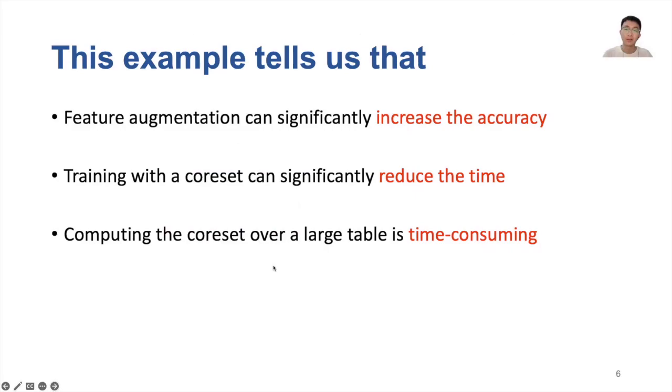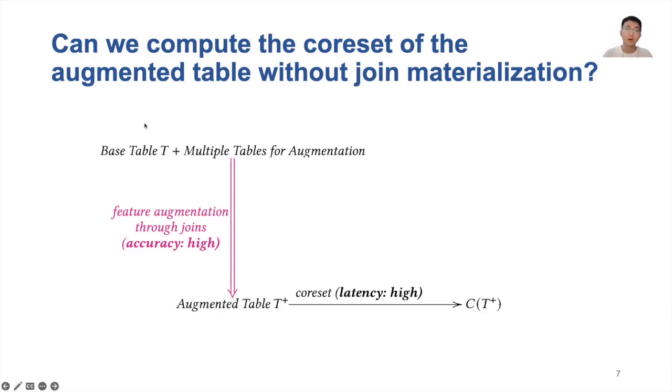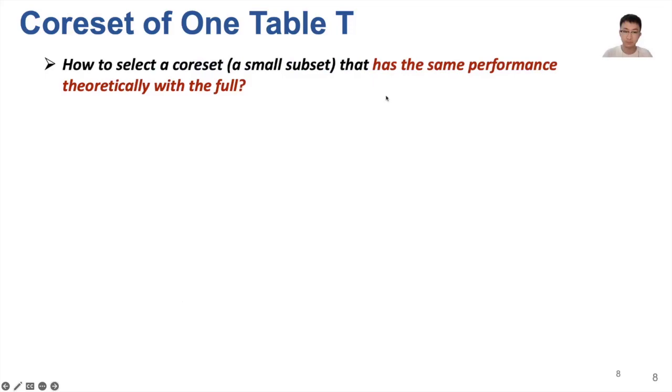However, computing the coreset over a large table, for example, the augmented table, is time consuming. Therefore, in order to efficiently compute the coreset of the augmented table, the problem we aim to tackle is whether we can compute the coreset of the augmented table without join materialization.